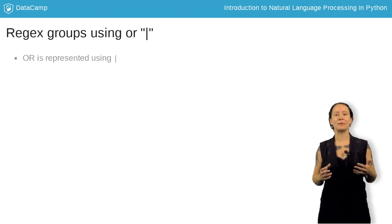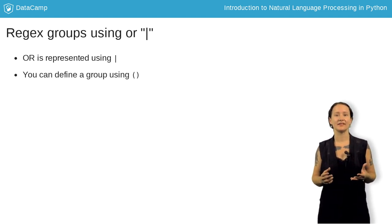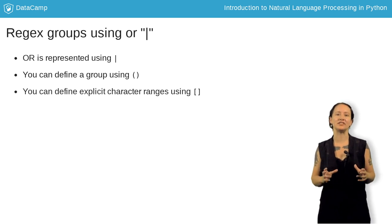In regex, OR is represented by the pipe character. To use the OR, you can define a group using parentheses. Groups can be either a pattern or a set of characters that you want to match. You can also define explicit character ranges using square brackets. We'll go into a bit more depth on groups and ranges soon.